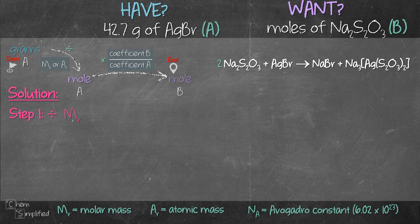Step one is to divide the given mass 42.7 grams with the molar mass of A, which is AgBr. That comes out to be 187.77 grams per mole. If you need a refresher on calculating molar mass, I'll link the video on the top as well.